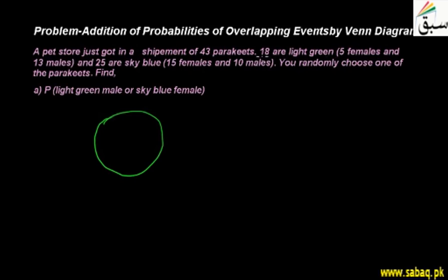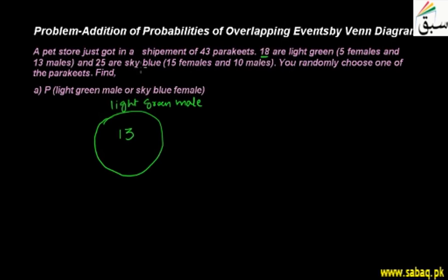For light green males: there are 18 light green parakeets total, and 13 of them are male. For sky blue females: there are 25 sky blue parakeets total, and 15 of them are female. So we have 13 light green males and 15 sky blue females — these go into separate boxes representing different colors.